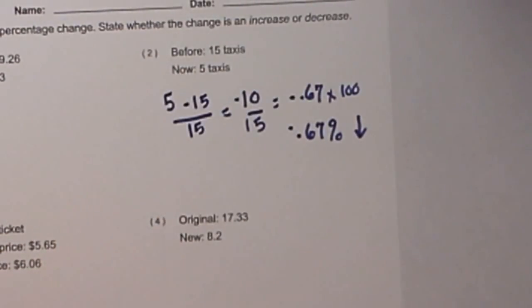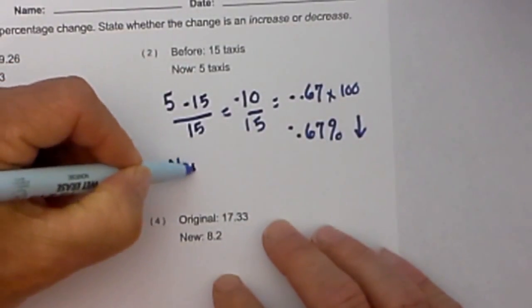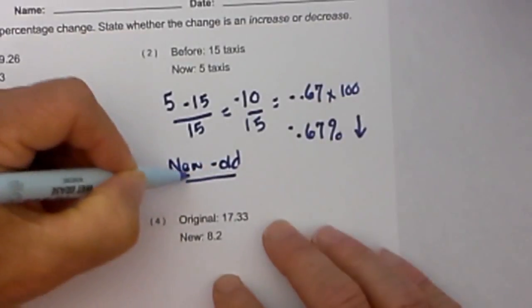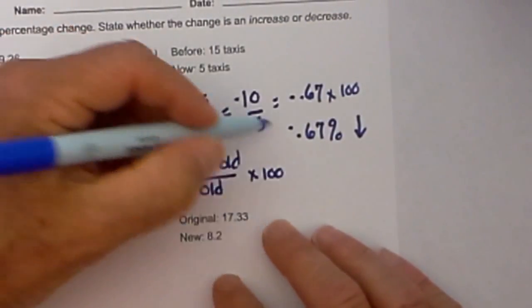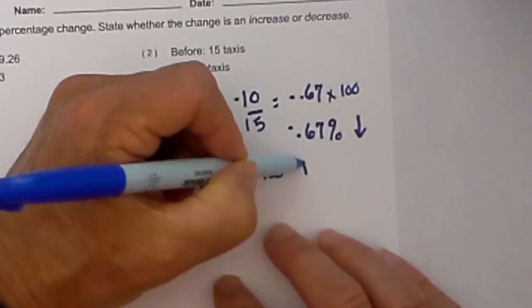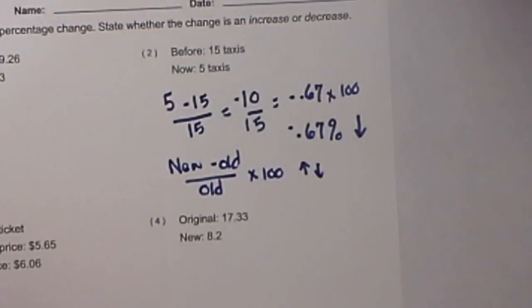Hope that helps. The formula is: take new minus old, over old, times 100. That will give you the percent increase or decrease. Thanks for watching.